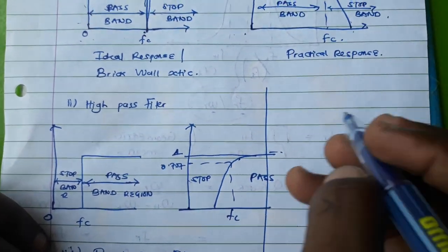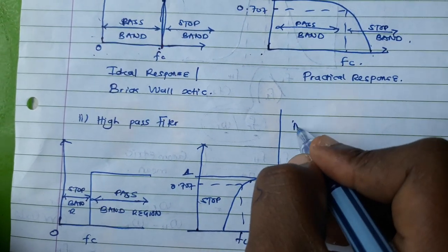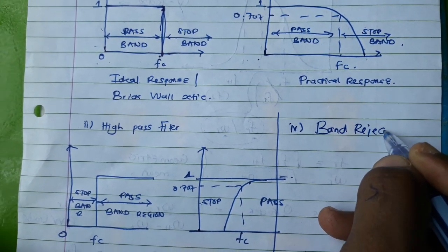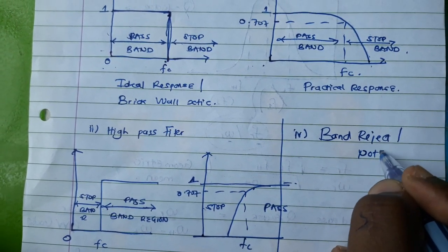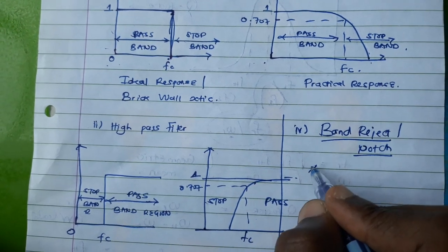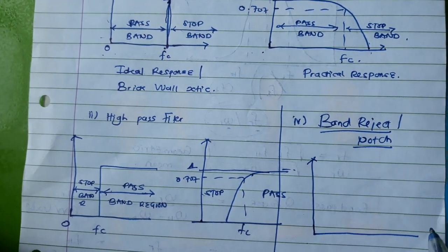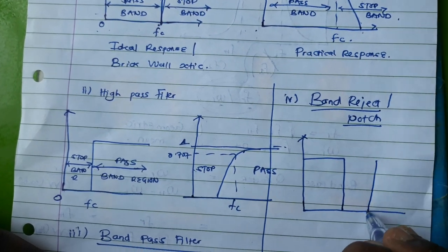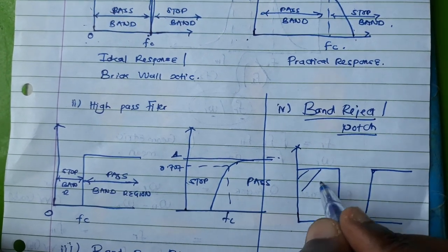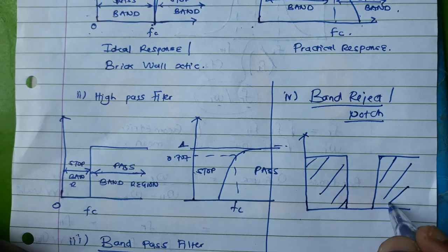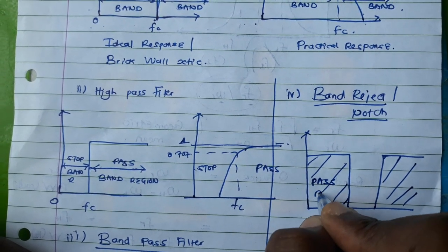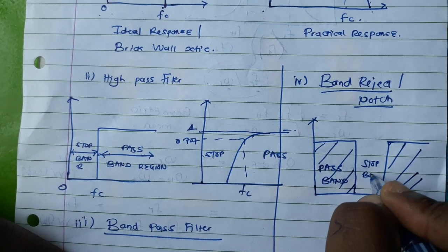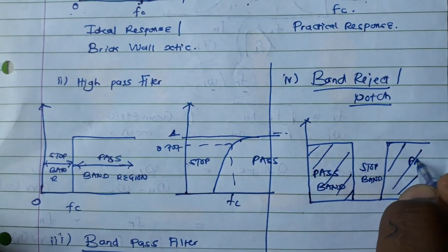We can also look at the band reject or notch filter. The ideal response. So this is our passband, this is our stopband, this is our passband.